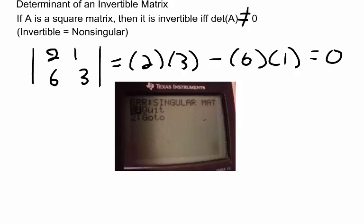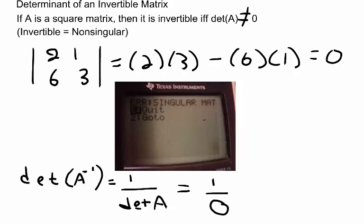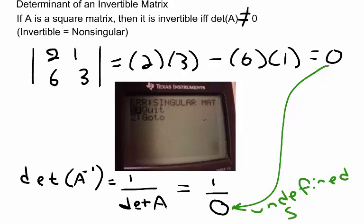We could also try finding the inverse manually by using det(A inverse) equals 1 divided by the determinant of A. So in this case we have 1 divided by 0, which is the determinant of A in this case, and we know that division by 0 is undefined, so the matrix is singular.